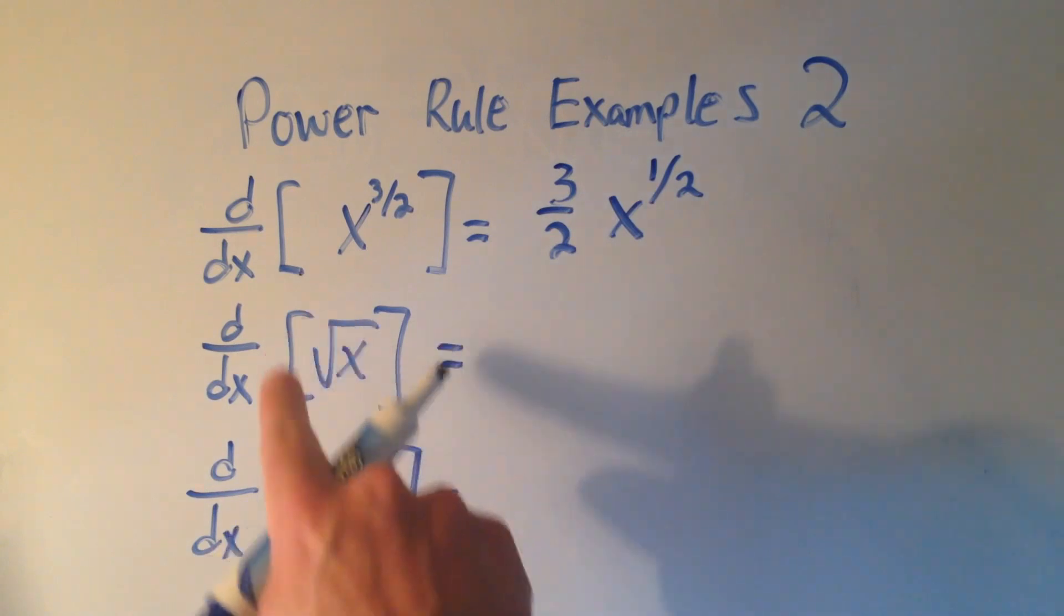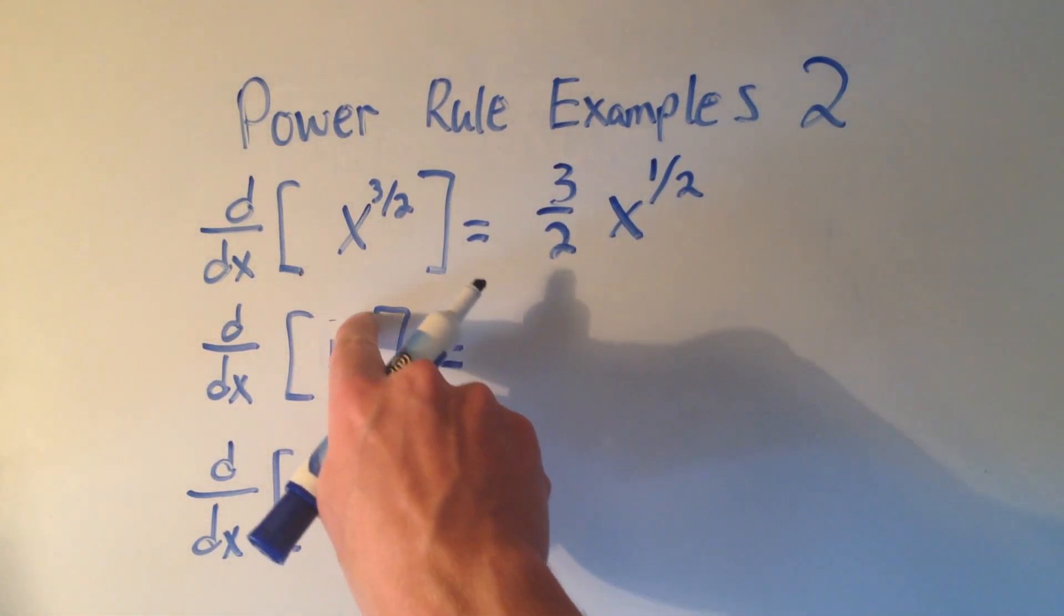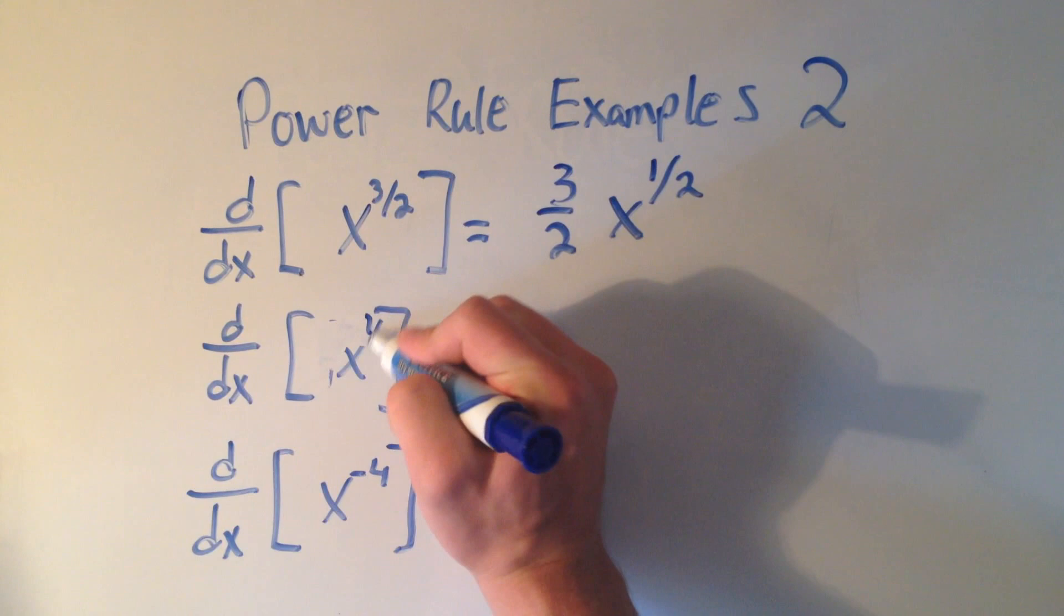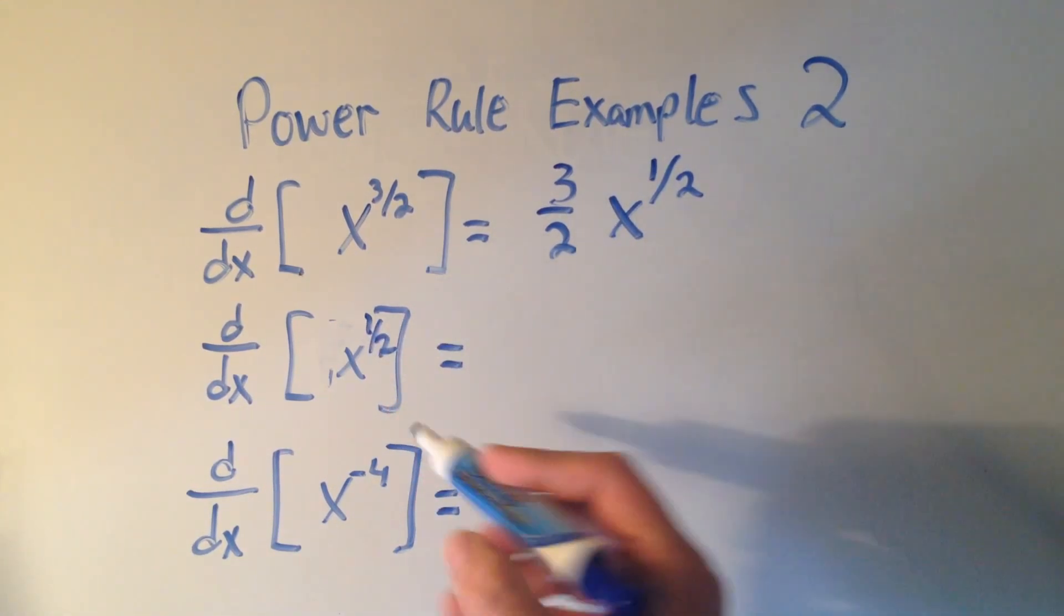If I want to take the derivative of the square root of x, that's another way of saying x to the 1 half power, right? And I just keep using the same rule.